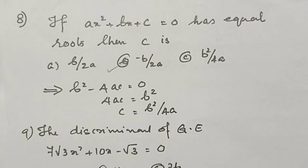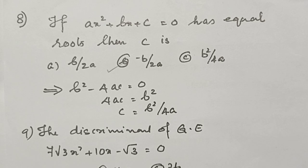If ax squared plus bx plus c equals 0 has equal roots, then what is c? Since the roots are equal, b squared minus 4ac equals 0. Therefore, the correct answer is minus b by 2a.